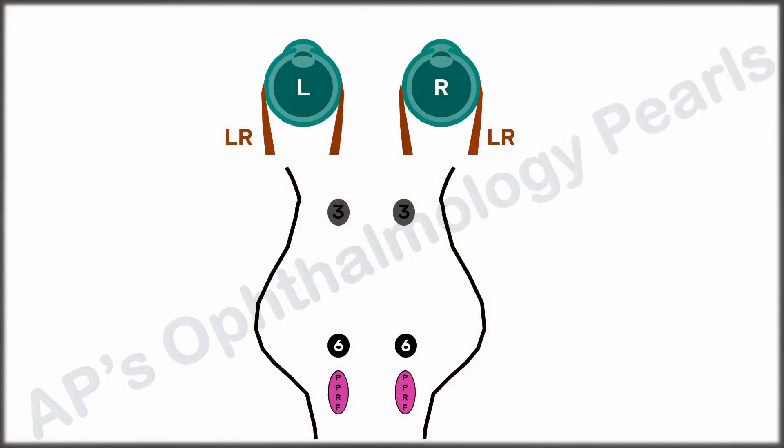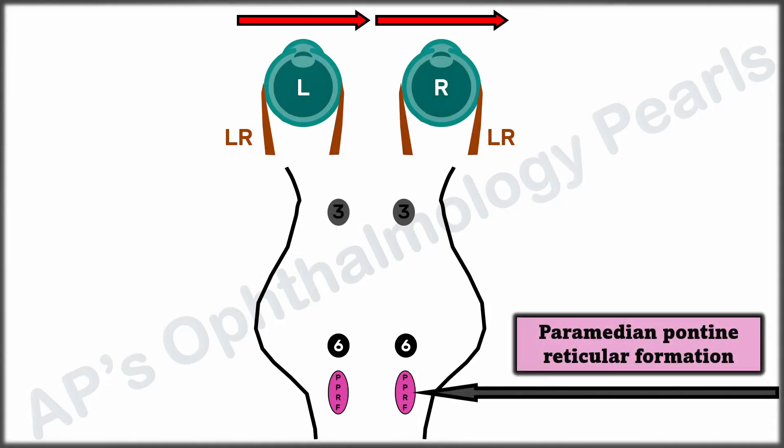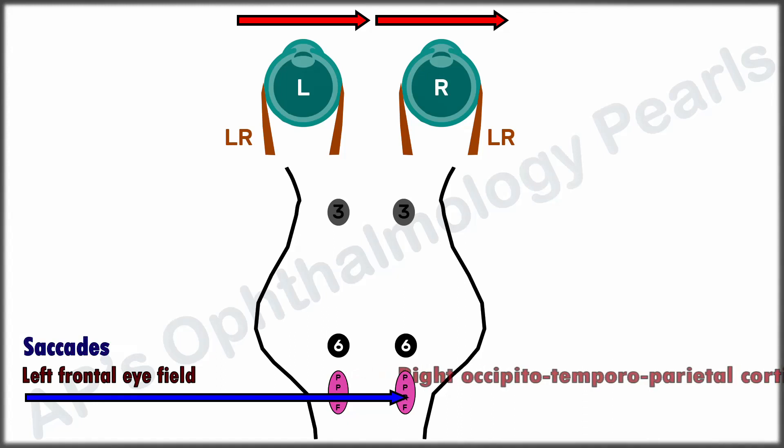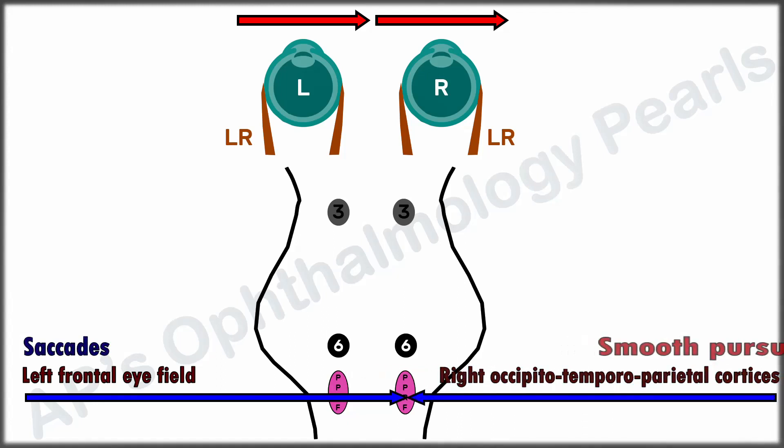Understanding the horizontal gaze pathway provides the key to understanding the fundamentals of INO and 1.5 syndrome. Inputs for horizontal gaze reach the ipsilateral paramedian pontine reticular formation from the contralateral frontal eye field for saccades and the ipsilateral occipitotemporal parietal cortices for smooth pursuit.